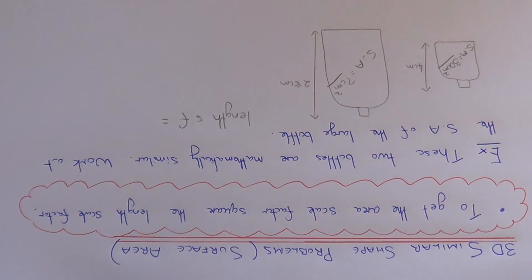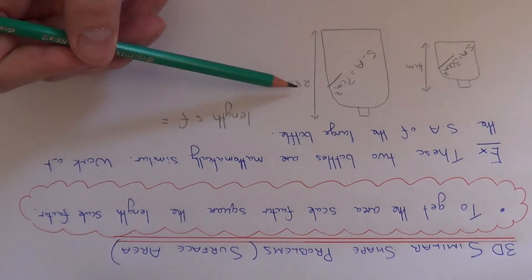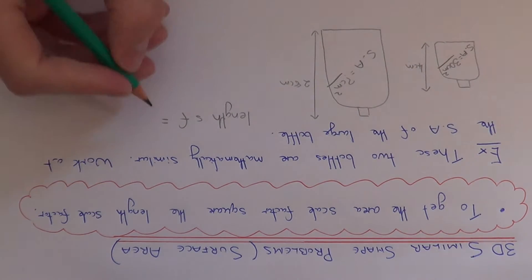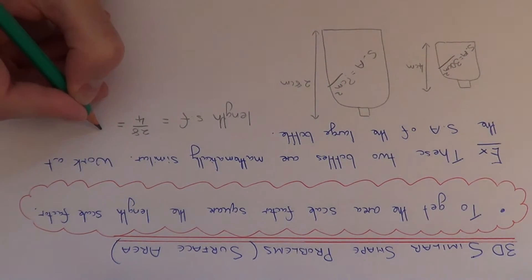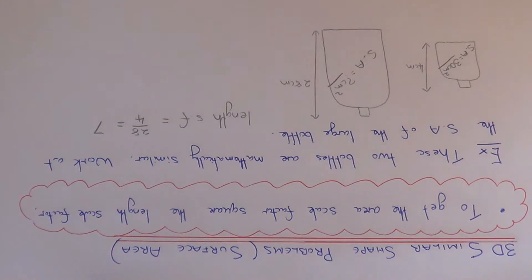To get the length scale factor we just divide the heights of both containers. So we do 28 divided by 4, which gives us an answer of 7. This tells us that the lengths of the larger bottle are 7 times as big as the lengths on the smaller bottle.